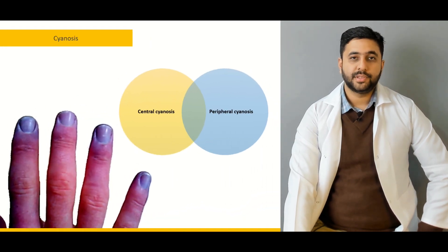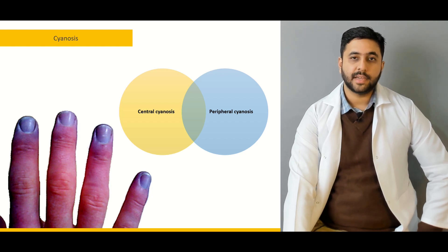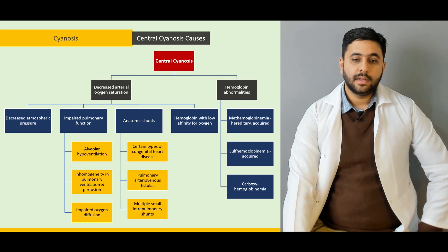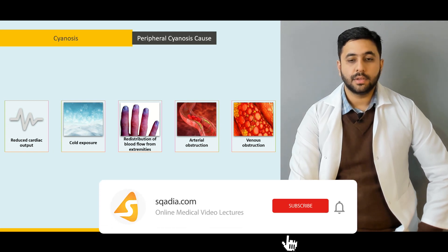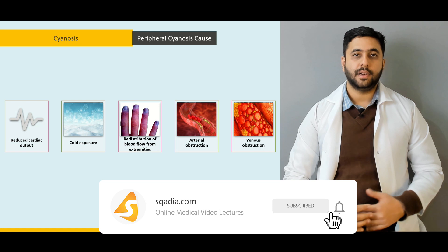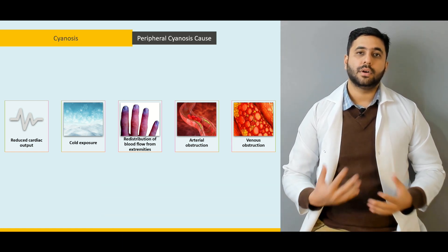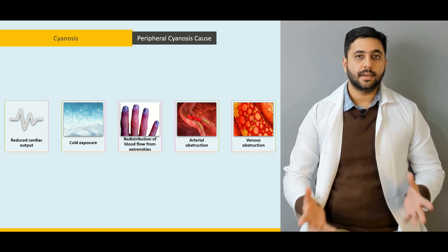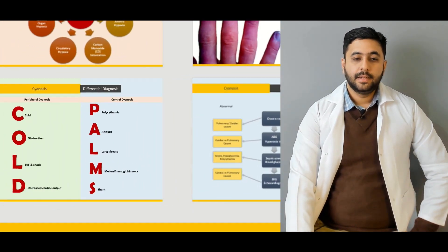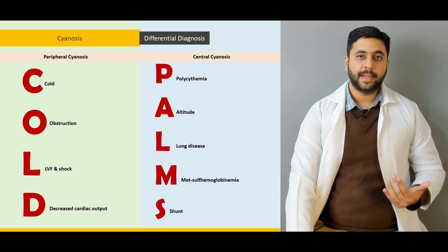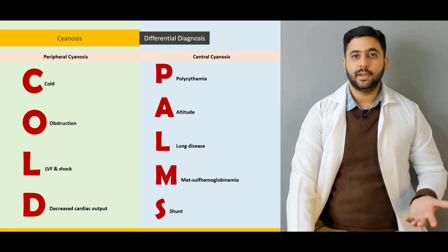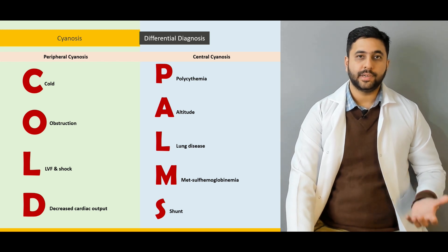We are going to talk about the bluish discoloration of the skin in terms of cyanosis — either central or peripheral cyanosis. The causes of central cyanosis will be discussed in great detail, then we are going to move on to peripheral cyanosis. Because it is very important to differentiate central and peripheral cyanosis clinically, as the conditions causing both are primarily different. I am going to give you a couple of very helpful mnemonics to remember the causes of peripheral and central cyanosis, which will help you in differentially diagnosing the two conditions.